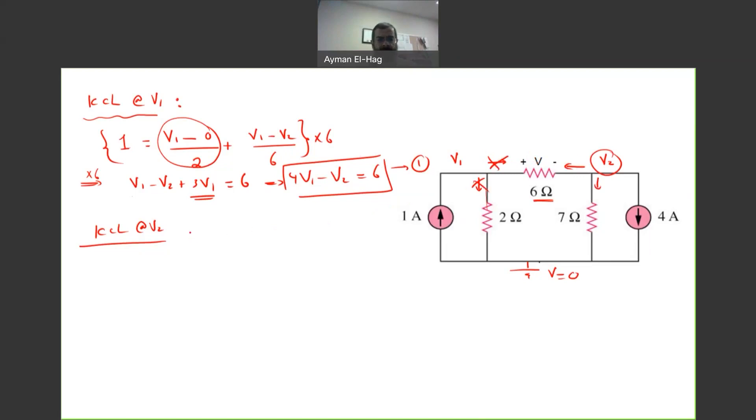So, the current to the left becomes equal to V2 minus V1 divided by six plus to the bottom V2 minus zero divided by seven. Seven, leaving plus four equal to zero. So, I will multiply everything times 42, the least common factor.